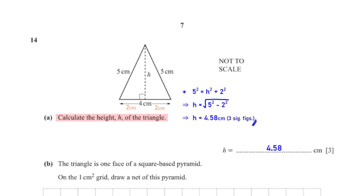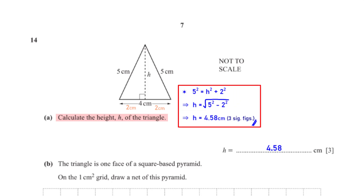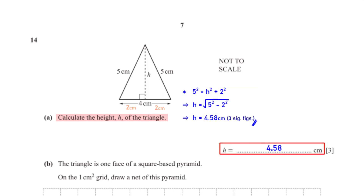Calculate the height h of the triangle. We apply the Pythagorean theorem: 5² = h² + 2². Making h the subject and evaluating gives us h = 4.58 centimeters, rounded to three significant figures.